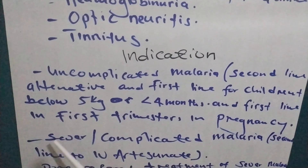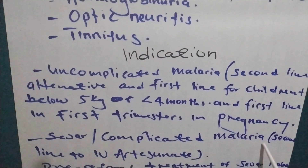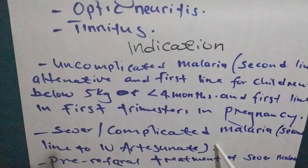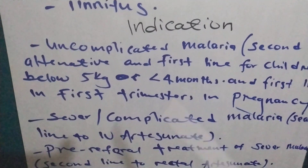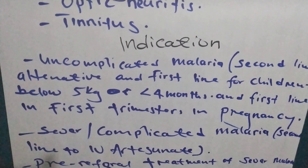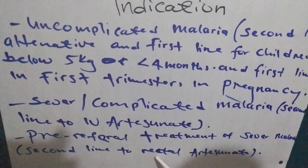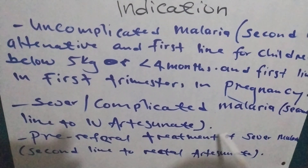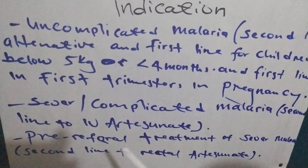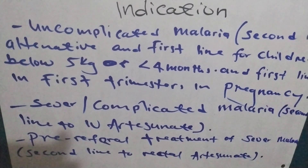We also use quinine in severe or complicated malaria as a second-line treatment to IV artesunate. We can also use it as a pre-referral treatment for severe malaria as a second-line treatment to rectal artesunate — meaning we can give quinine if rectal artesunate is not available.